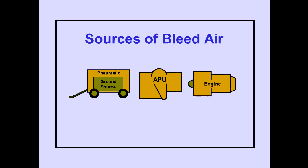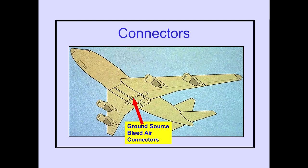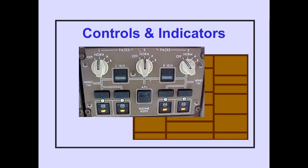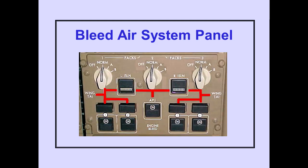There are three sources of bleed air: ground source, APU, and engines. Bleed air from a ground source may be used to pressurize the bleed air system, with connectors located on the fuselage. Controls and indicators for the bleed air system are located on the overhead panel, which is laid out schematically to represent the bleed air system.